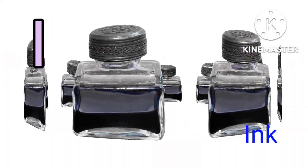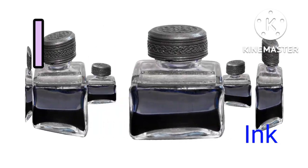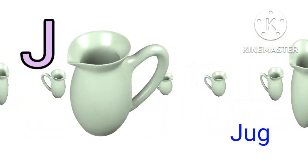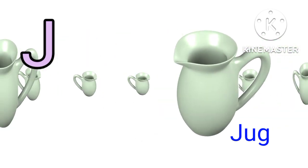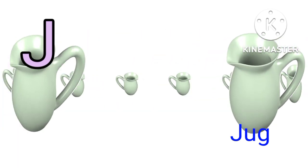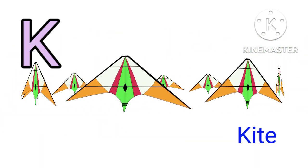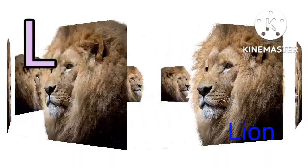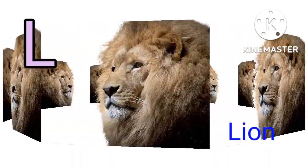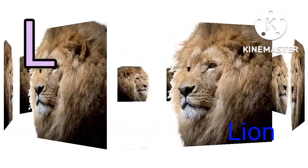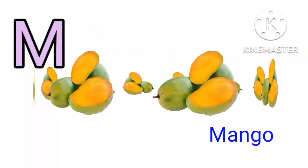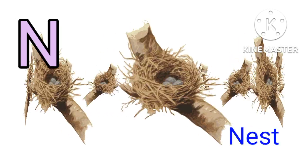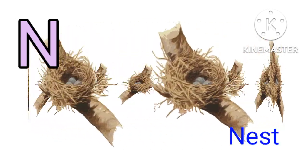I for Ink. J for Jug. K for Kite. L for Lion. M for Mango. N for Nest.